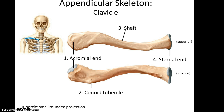The clavicle has four unique important features. It has an acromial end, which has an articulating facet on the shoulder side of the clavicle. Near there is the conoid tubercle, which sticks out. You have the long shaft of the clavicle. And then at the medial end you have what's referred to as the sternal end, because it articulates with the sternum.